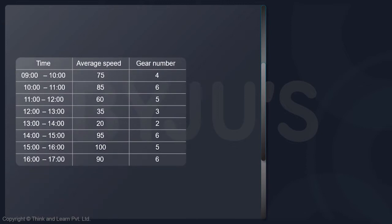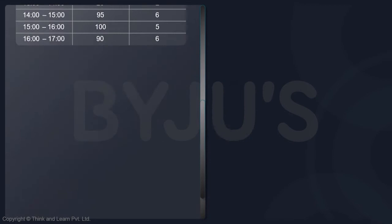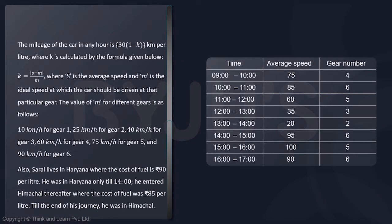This is the data table from 9 to 10. His average speed was 75 and the gear he was going throughout the hour is 4. This is how the table is given - you have average speed and the gear at which you are going. Now, the information says the mileage of the car in any hour is given by 13(1 - k) where there is a formula for k.